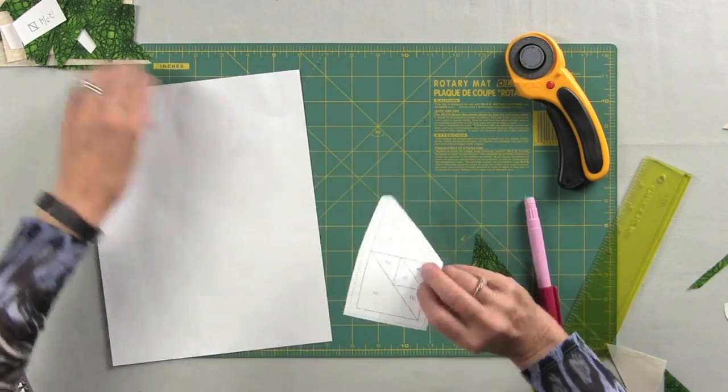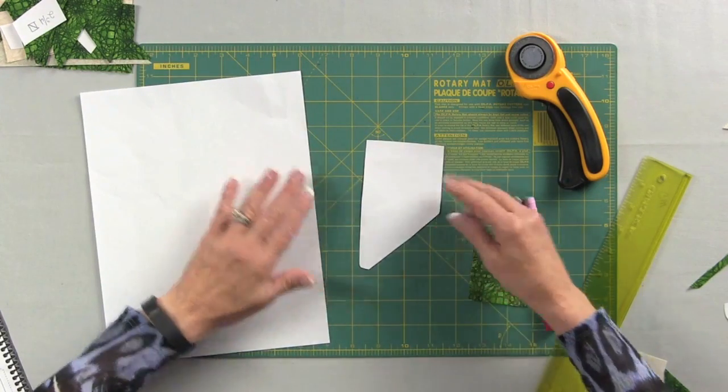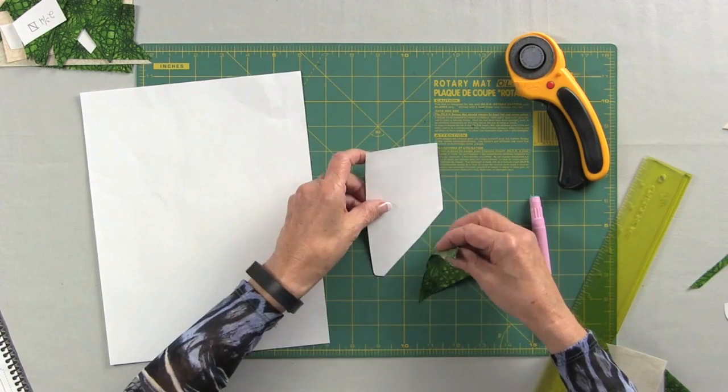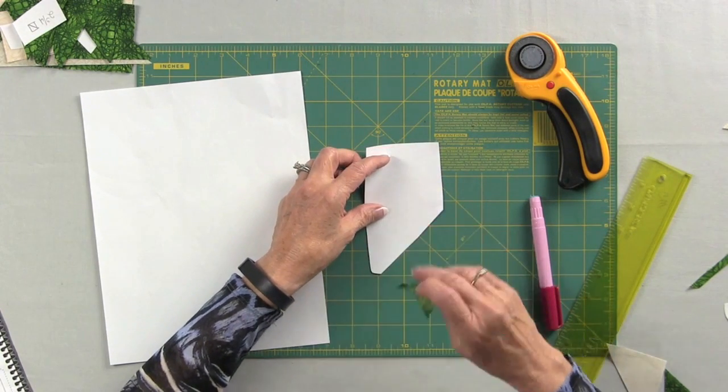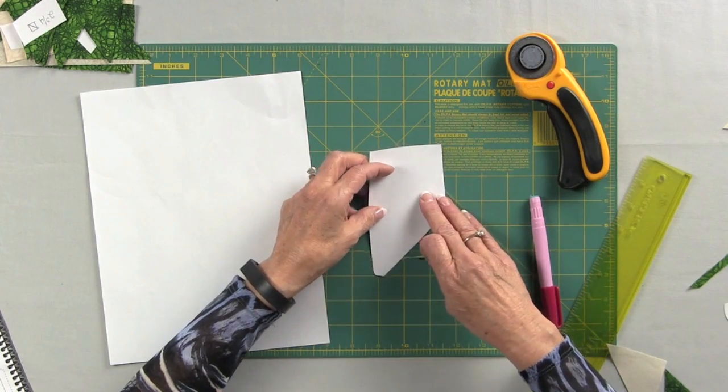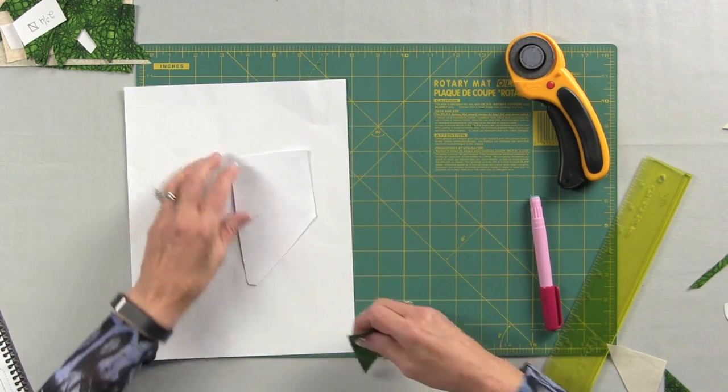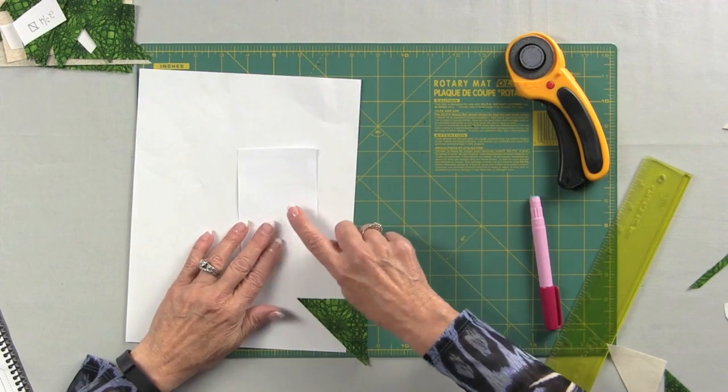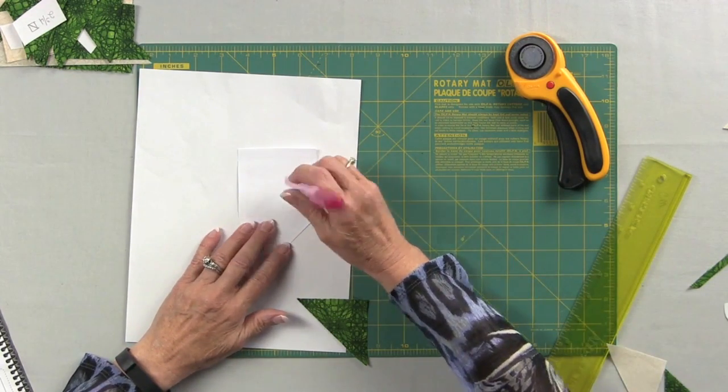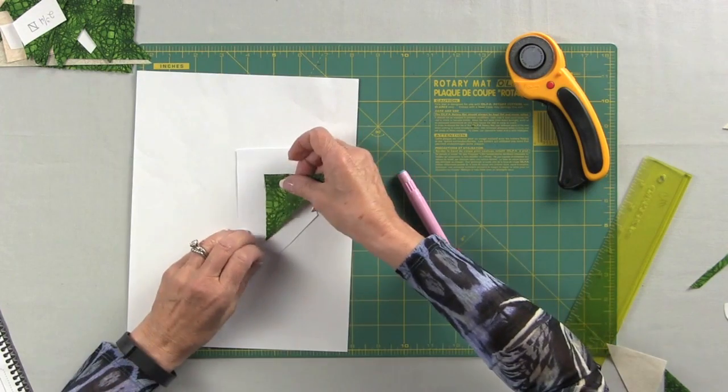Now when people are paper piecing, sometimes they get a little confused because they have to put the piece right side up on the back side of the pattern. They can't see the line so they don't know where their number one piece is going to go. What I recommend is put it on a white piece of paper. Your lines are going to pop through so then you can see where your number one is at. Just use a little bit of glue and then position your number one piece.